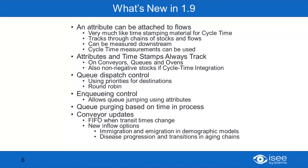To summarize what's new in 1.9: we've added the ability to attach an attribute to a flow, so that things going through a sequence of stocks will follow that attribute through the sequence, which is very much like timestamping used for cycle time. Attributes and timestamps always track — you don't have to turn on cycle time mode anymore. You can use attributes and timestamps in queues, conveyors, and ovens, which are always discrete. If you want to use them on non-negative stocks you will need to turn on cycle time integration. We've also made cycle time quite a bit more efficient, so turning on cycle time integration should not have a big impact on model performance anymore.